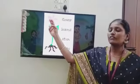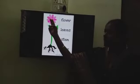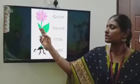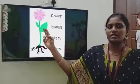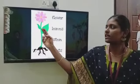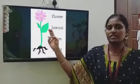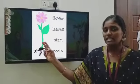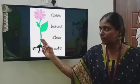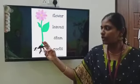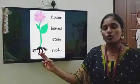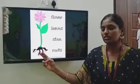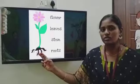What is this? Flowers. These are leaves. This is a stem. These are roots. Now I am going to take you to a beautiful place — let's see.